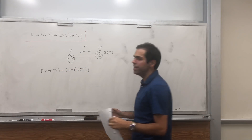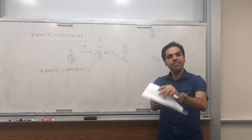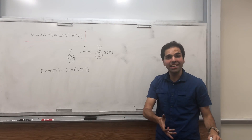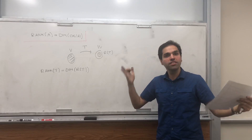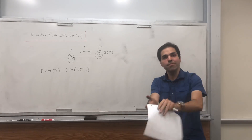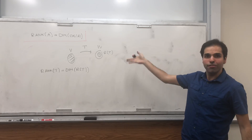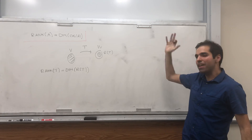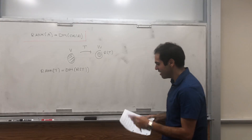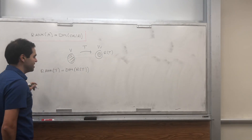So if that linear transformation takes your whole space and squeezes it onto a line, then the rank would be one — it makes your space one-dimensional. If it takes it to a plane, it's two-dimensional, etc. And you might ask: what does this have to do with matrices?